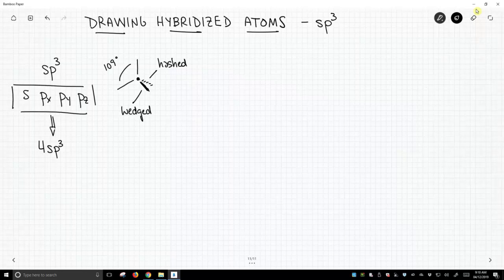So we're trying to impart this three-dimensionality to this picture. When we do this, we always have four things coming off the central atom. Two will be separated by about a 109-degree bond angle and they'll be in the plane of the writing surface. Okay, let's see an example.